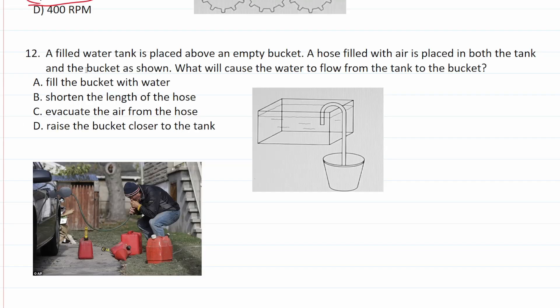Number 12 says a filled water tank is placed above an empty bucket. A hose filled with air is placed in both the tank and the bucket as shown. What will cause the water to flow from the tank to the bucket? So think about this one in terms of a real world example. Have you ever siphoned gas out of a gas tank? Well, of course you put a hose in the gas tank and you put the end of that hose in your gas can. But in order to get this gas flowing from the tank to your gas can, you have to first evacuate the air out of the hose. And that's the same thing here. Again, there's air in this line. In order to get this water flowing freely from this tank to this bucket, you have to evacuate the air from the hose. So this one is going to be C.